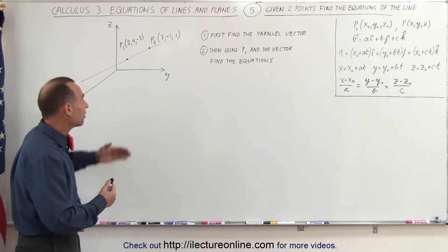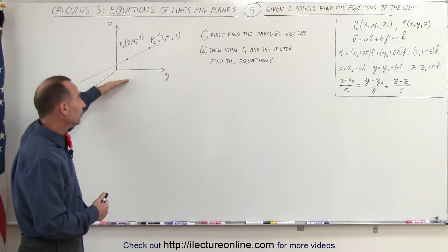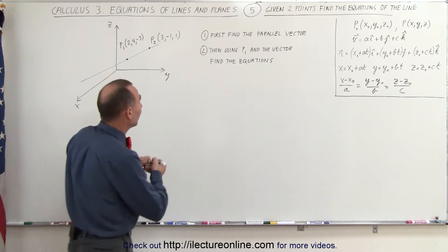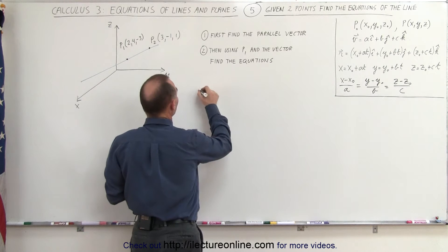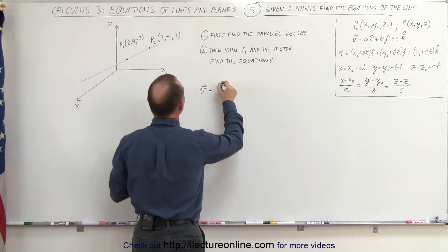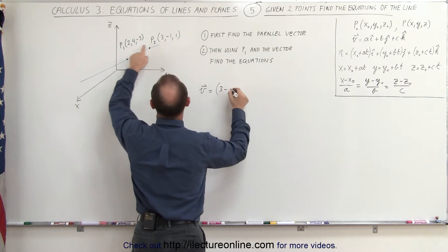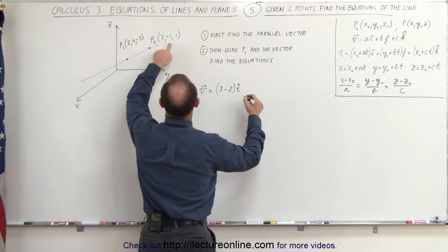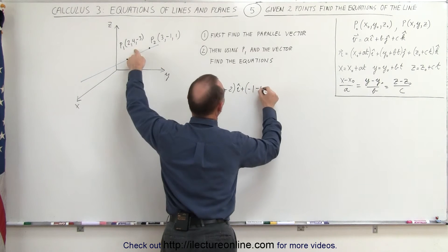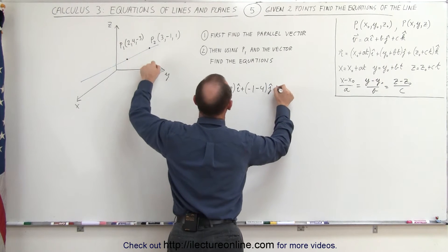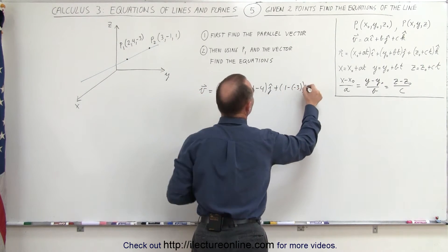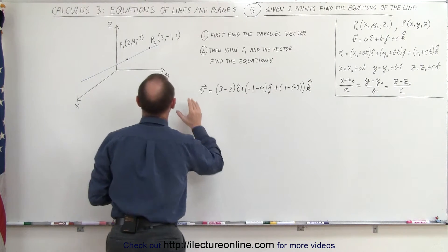Well, since we want to have a parallel vector, we first want to find the parallel vector using the two points. The way that's done is we can say that the vector v is equal to, let's take point 2 minus point 1: 3 minus 2 in the i direction, plus negative 1 minus 4 in the j direction, and plus 1 minus negative 3 in the k direction.